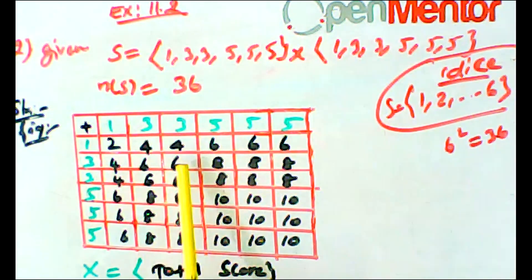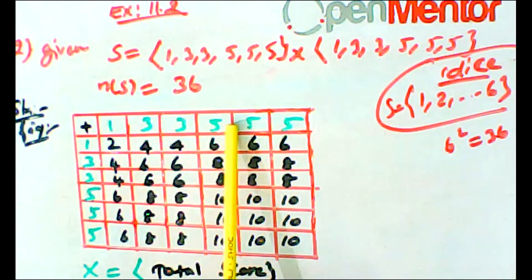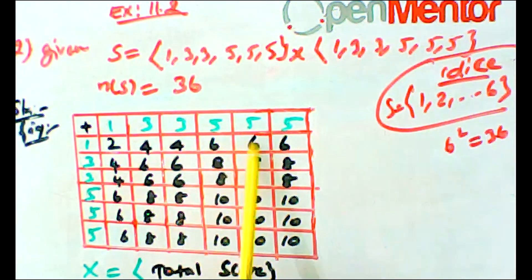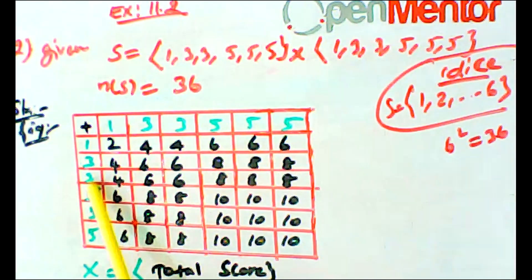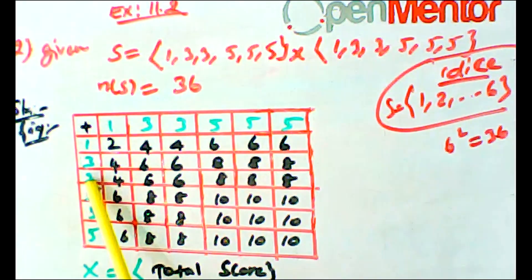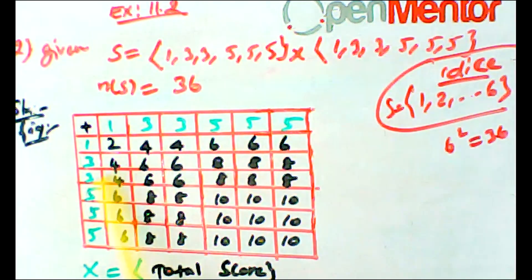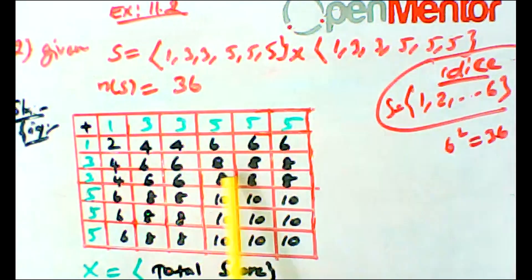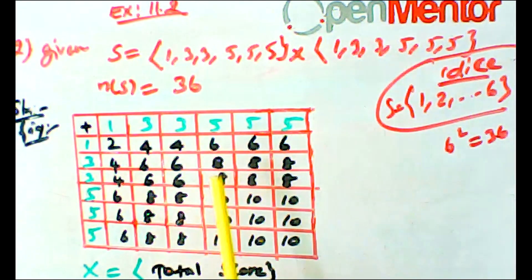The outcome pairs include: (3,3) giving score 6, (3,5) giving score 8, (3,5) giving score 8, (3,5) giving score 8. This gives us the maximum combinations for these face values.